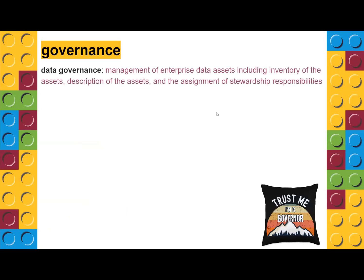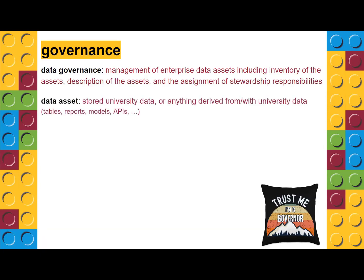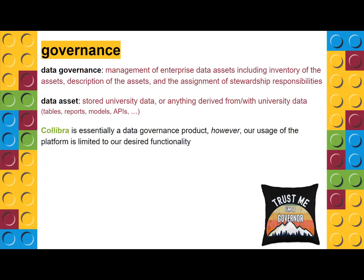Data governance is the broader umbrella under which Collibra falls — the management of enterprise data assets, including inventory of the assets, descriptions of the assets, and assignment of stewardship responsibilities. It's kind of everything about the data except the data itself. The data asset is stored data or something built upon the data: your models, dashboards, reports. Collibra is a governance product, but we only use portions of it — right now we're focused on the dictionary and glossary aspect.